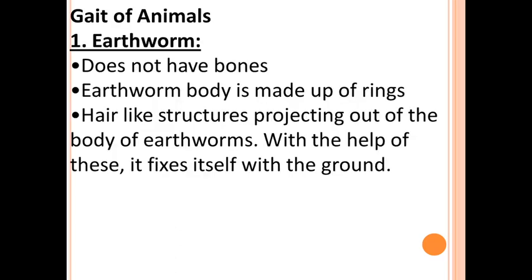The first animal we are going to learn about is the earthworm, but before that we will learn about internal skeleton and external skeleton, also known as exoskeleton. Human beings and animals having a backbone are called vertebrates — they have an internal skeleton made up of bones connected to muscles. In the case of insects, scorpions, starfish, and crabs, they have an external skeleton called exoskeleton, and tissues help their bodies move.